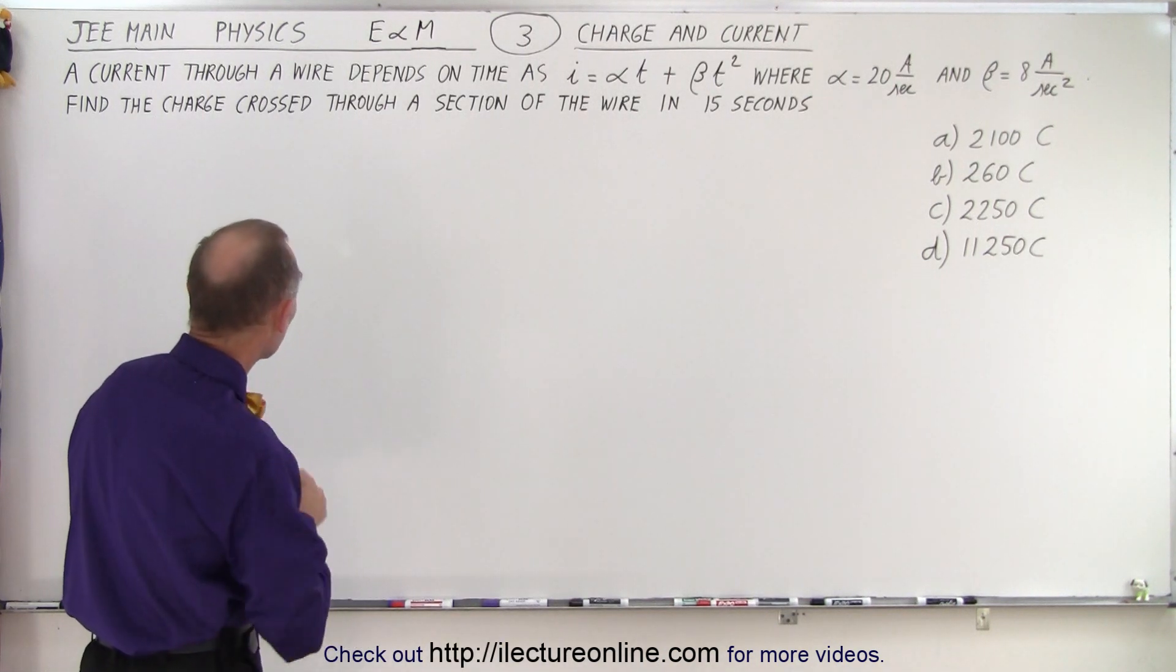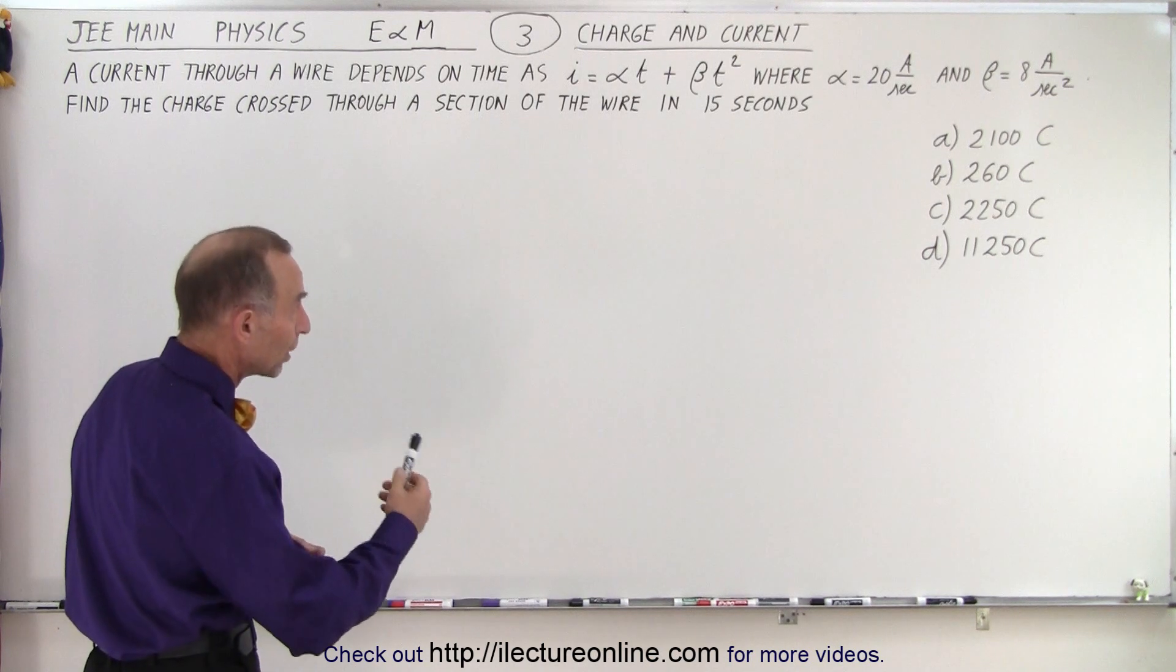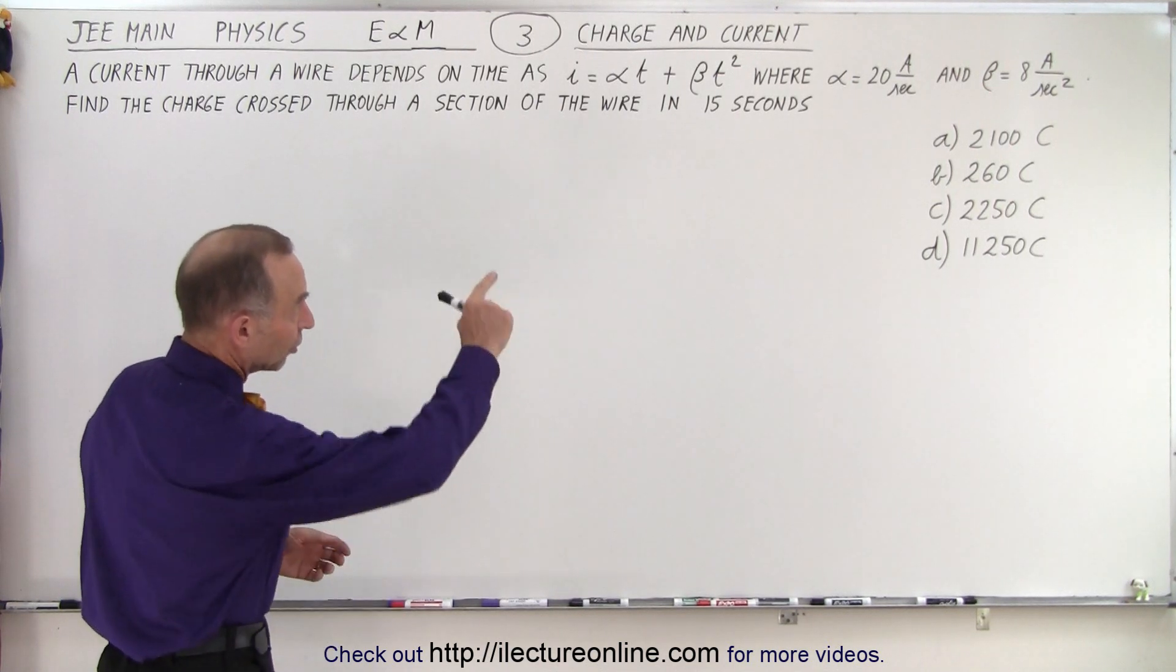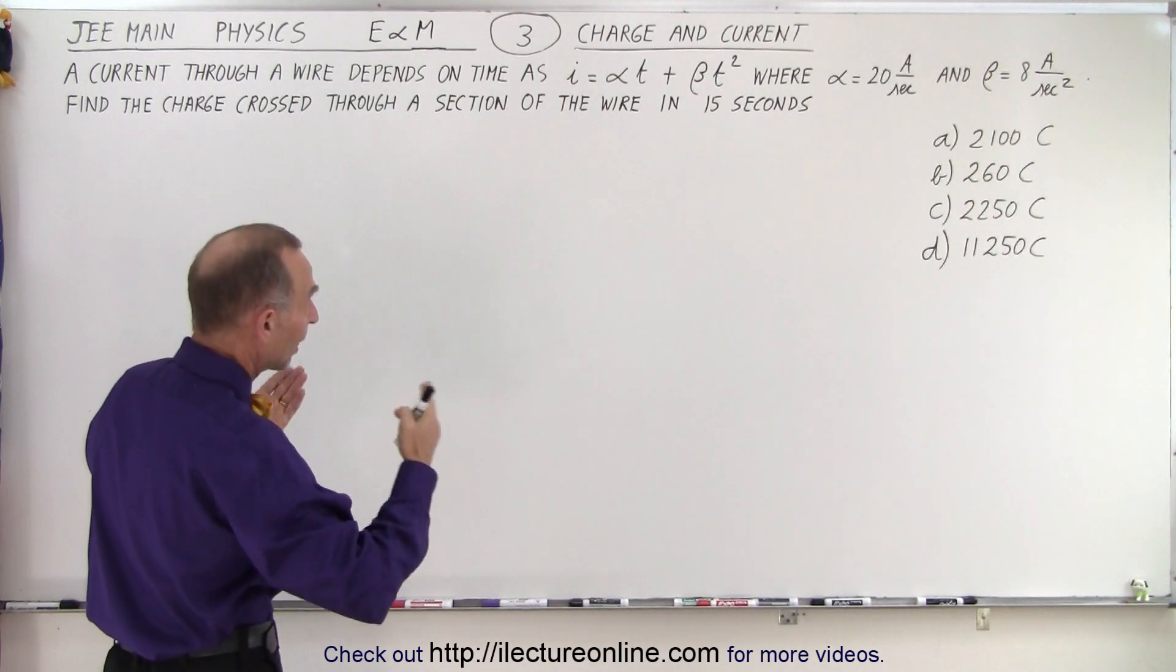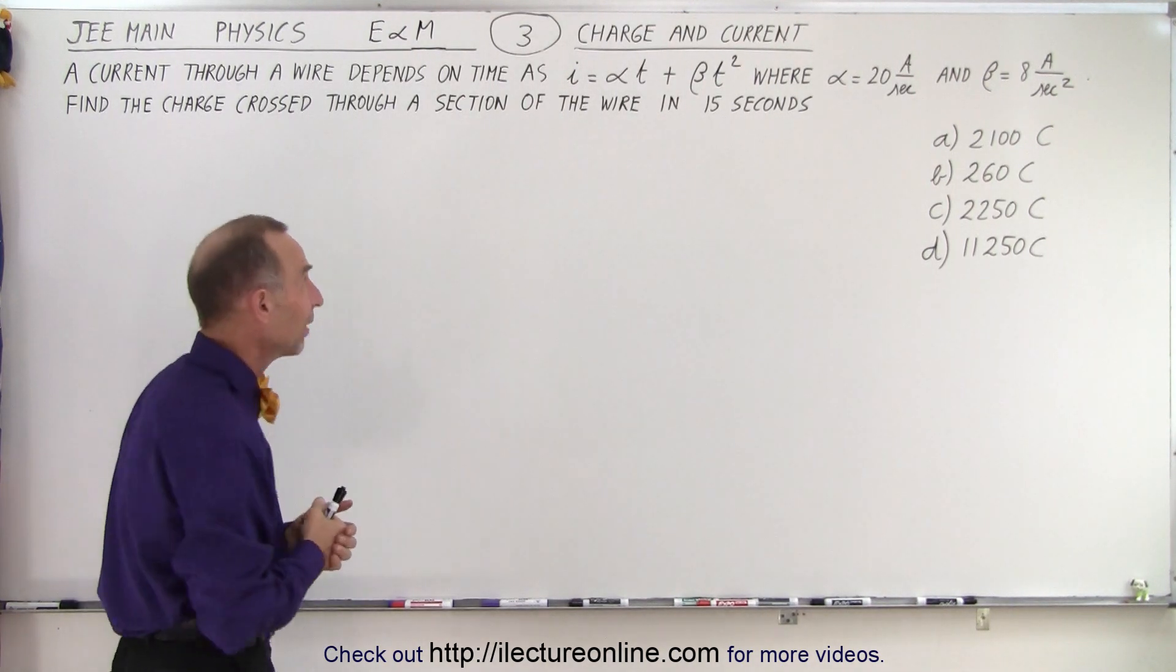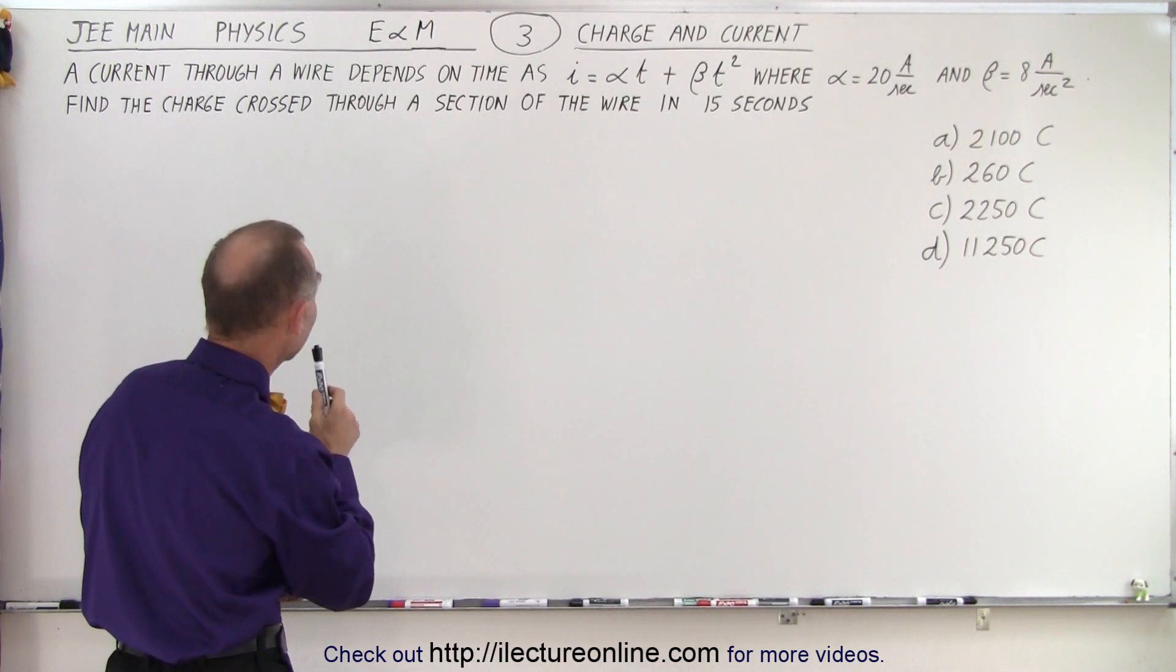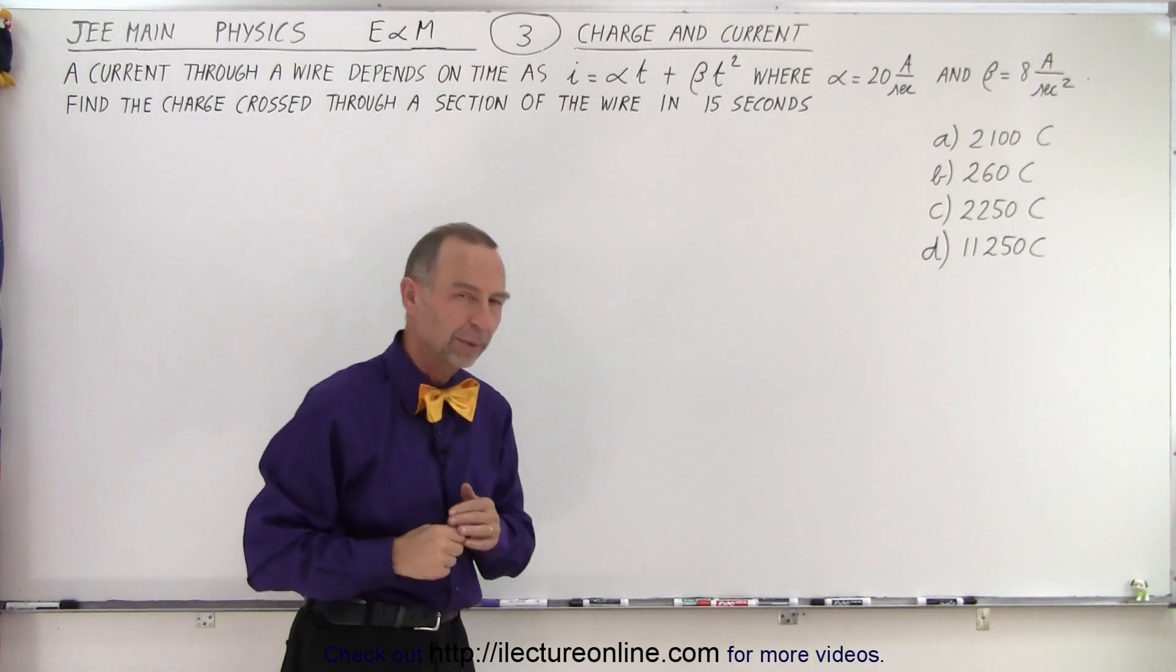A current through a wire depends on time as I equals alpha t plus beta t squared, where alpha is 20 amps per second and beta is 8 amps per second squared. You can see how the units need to match the equation because every term should have the units of amps. It asks us to find the charge that crossed through a section of the wire in 15 seconds, and they give us four possible answers.